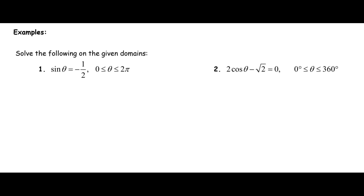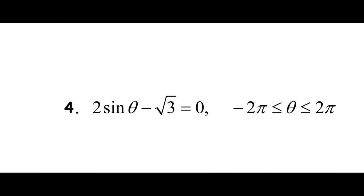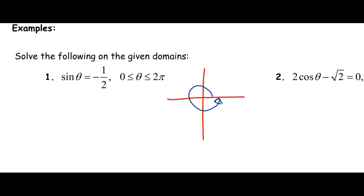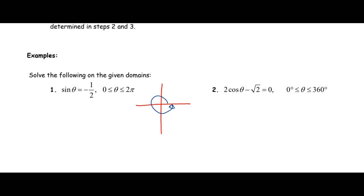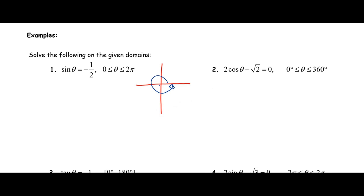Let's solve the equations on the given domain. For question one, the domain is zero to 2π — so we're looking for answers in radians within the first rotation around the circle. Sine is already isolated and equals negative one half. I ask: where is sine negative? Sine is associated with the y-coordinate, and sine is negative in quadrants three and four.